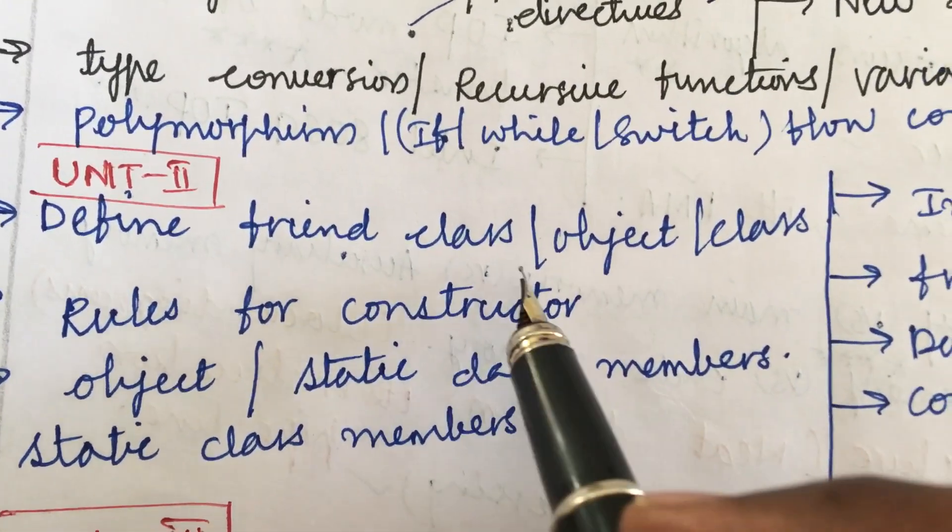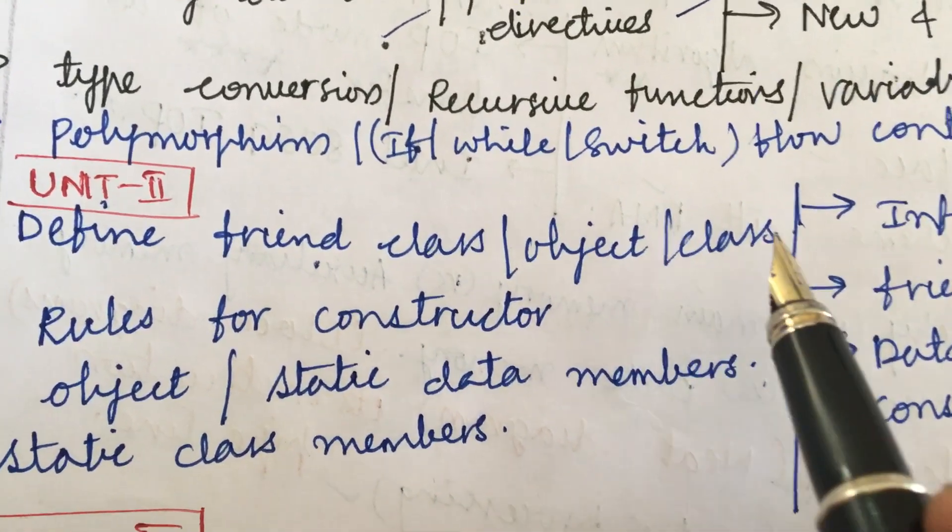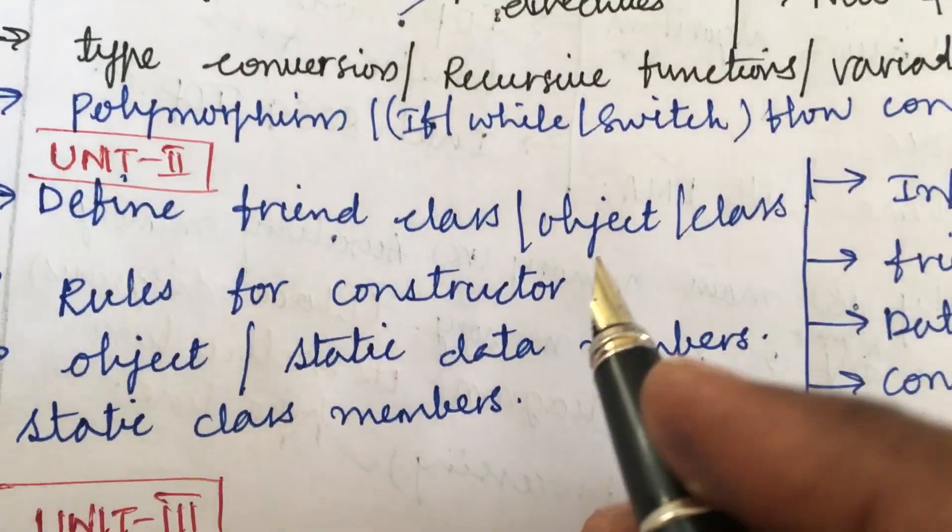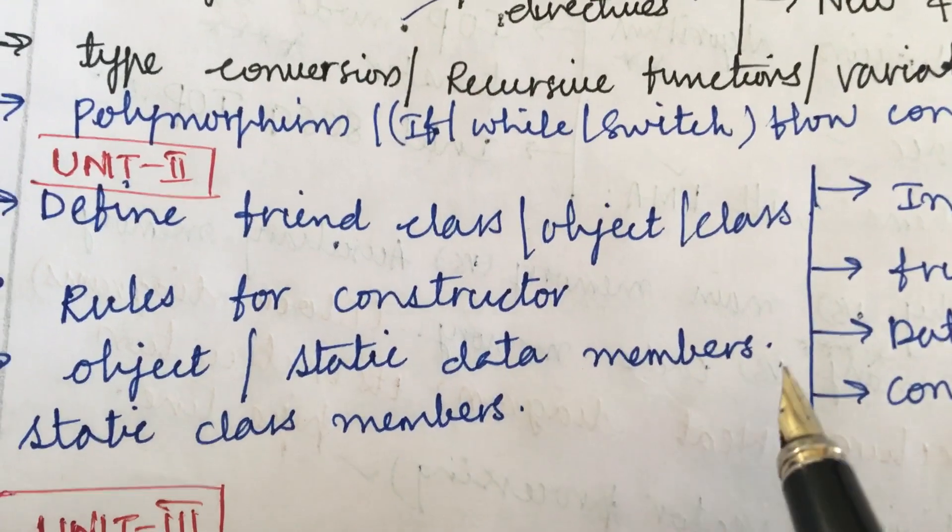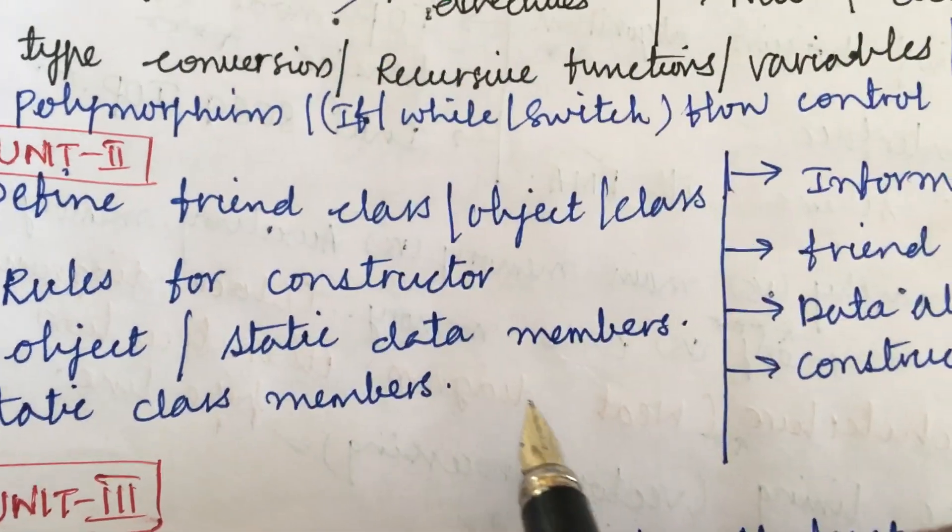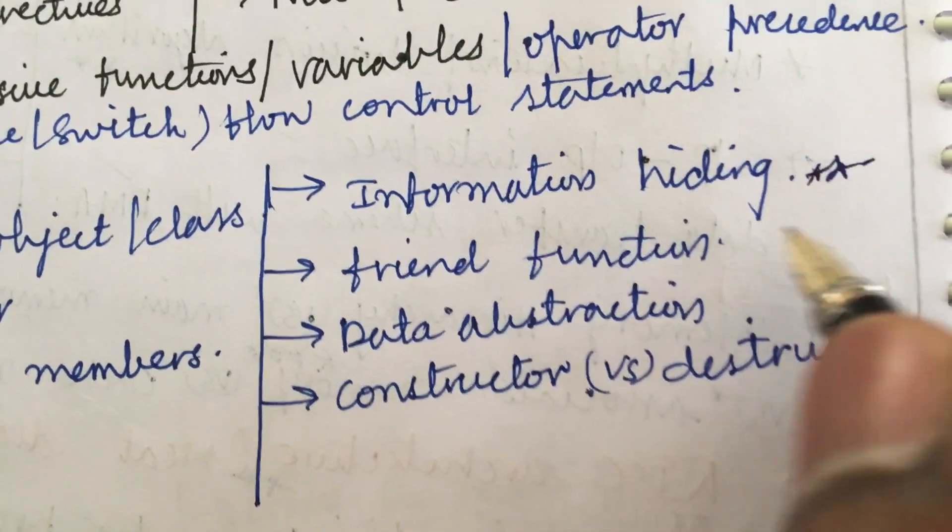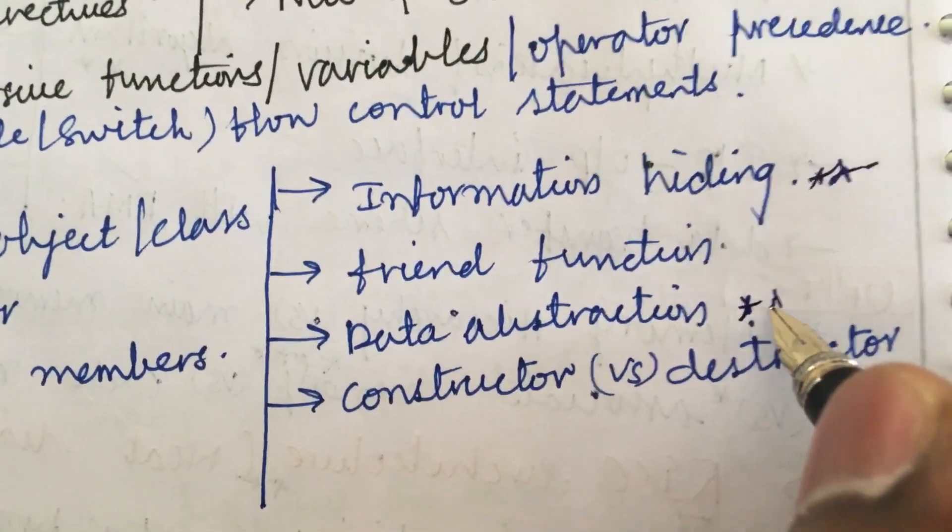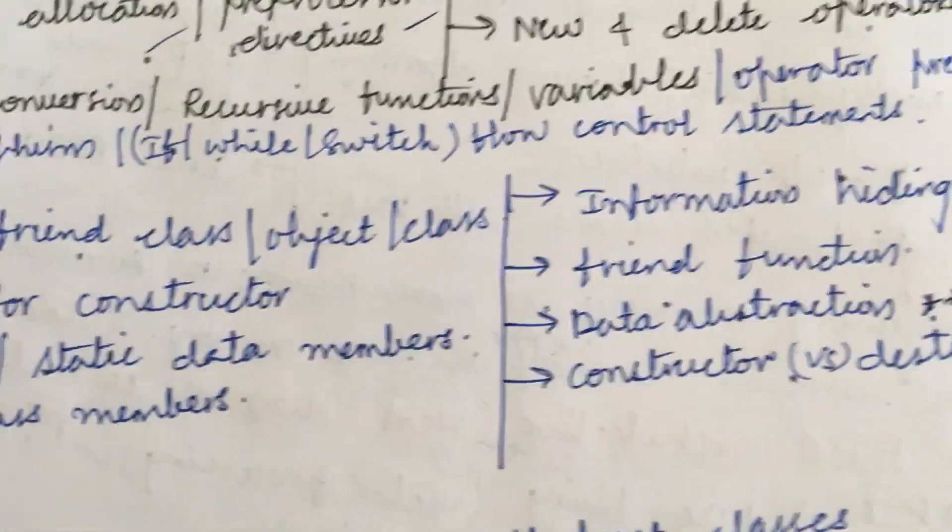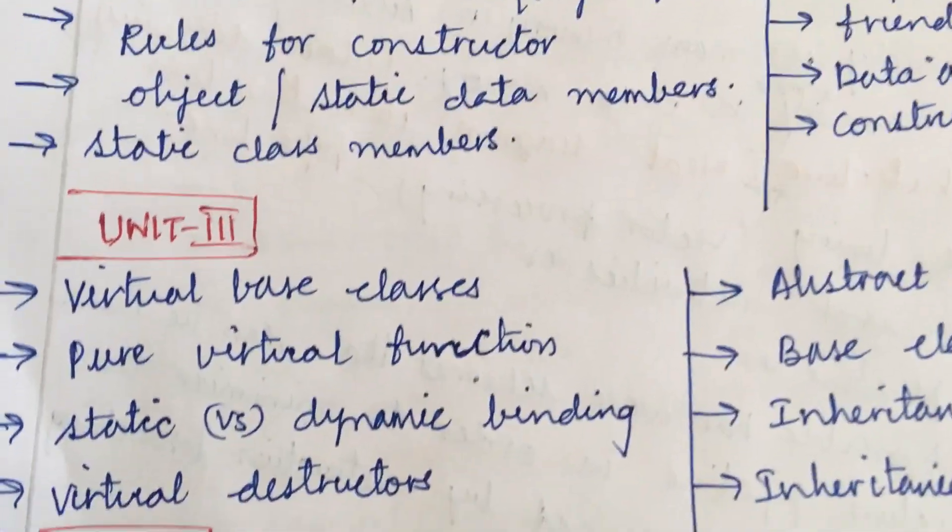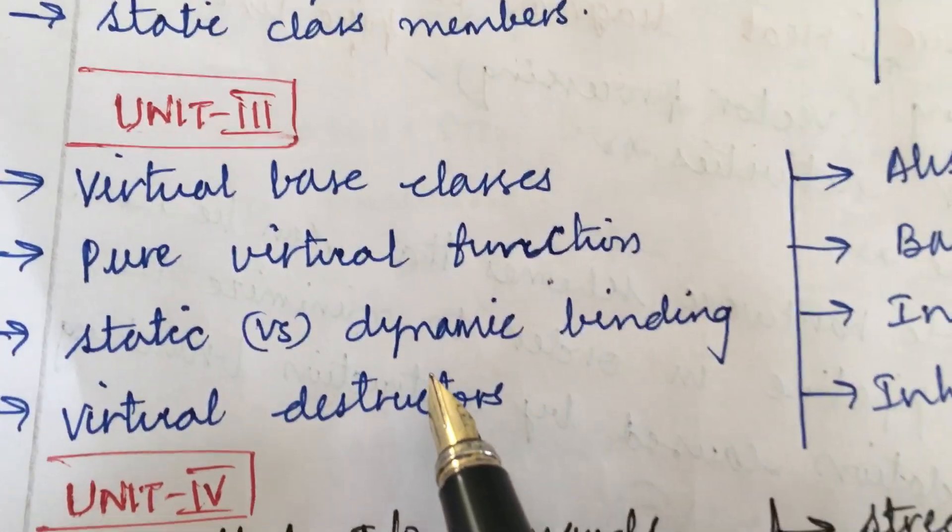Later, unit 2: define the friend class, define the object and the class and the rules for constructor, define the term object, static data members and static class members. Information hiding is a topmost question, friend function, data abstraction as well as constructor versus destructor. Such type of questions will come in 2 and 3 marks dear students.